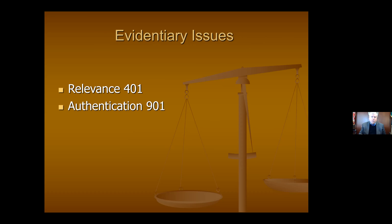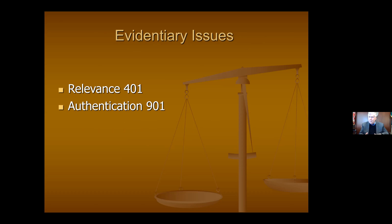The next issue is authentication. Authentication is what people normally are talking about when they say 'foundation,' and it's kind of misunderstood. It's actually a very low bar for admission — authentication is simply that we have some evidence that this document or exhibit is what it purports to be. Under Evidence Rule 901, authentication is established by a witness with knowledge: that this photograph fairly and accurately depicts what the scene looked like, or that this is in fact the contract, the email, the knife, or the Coke bottle.